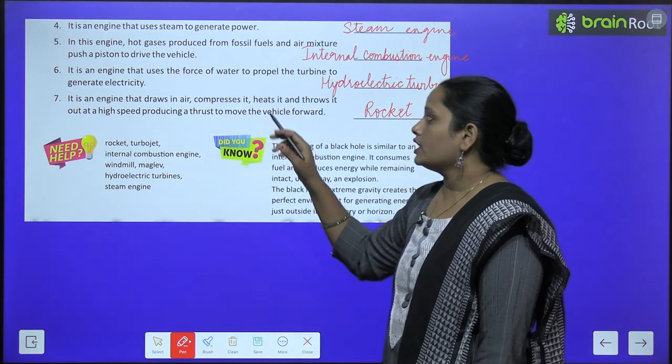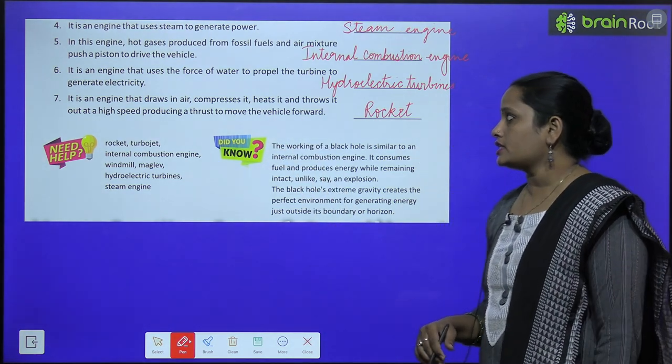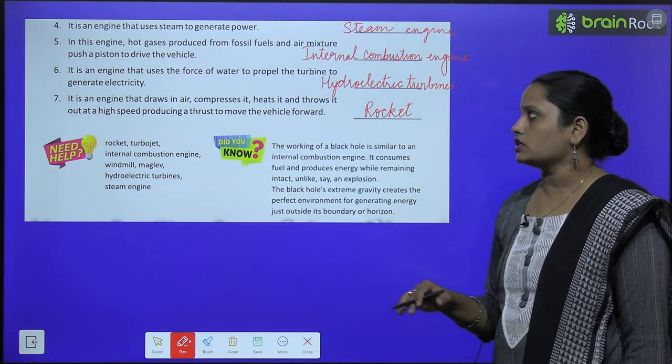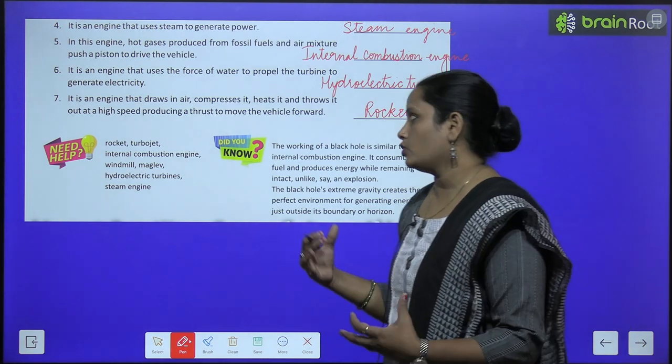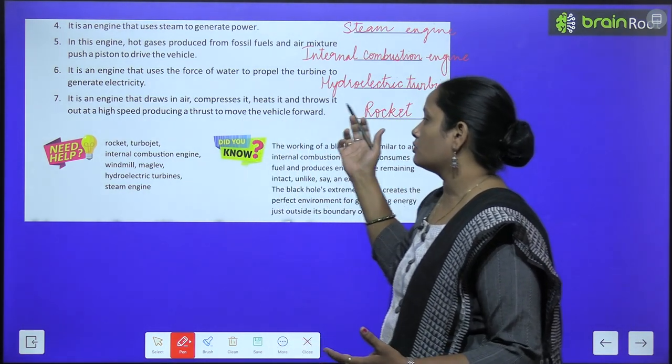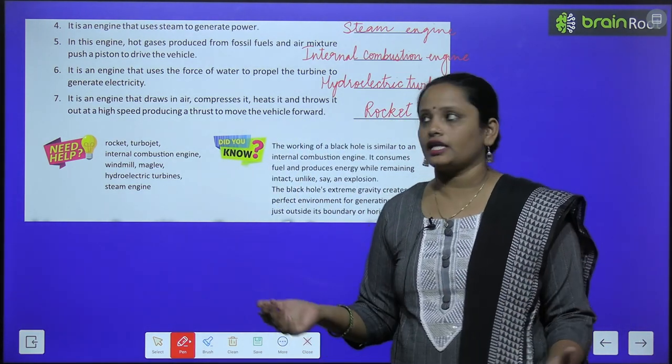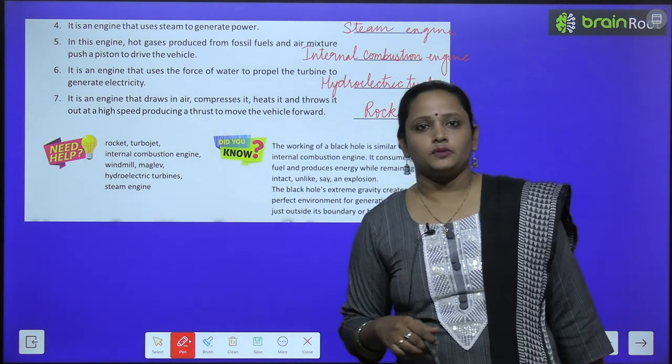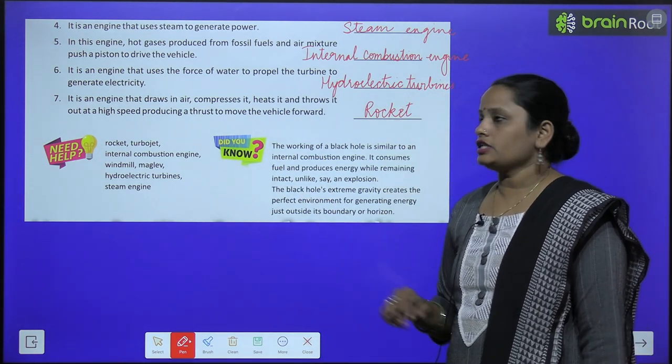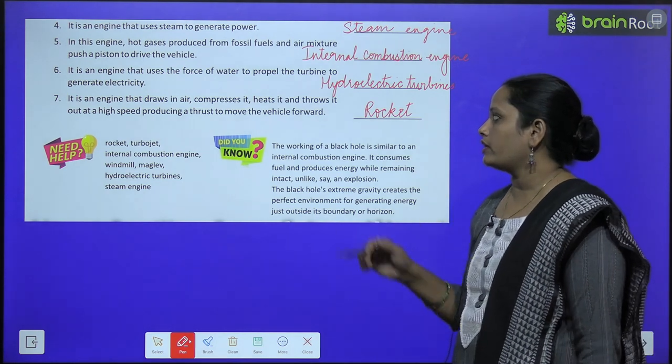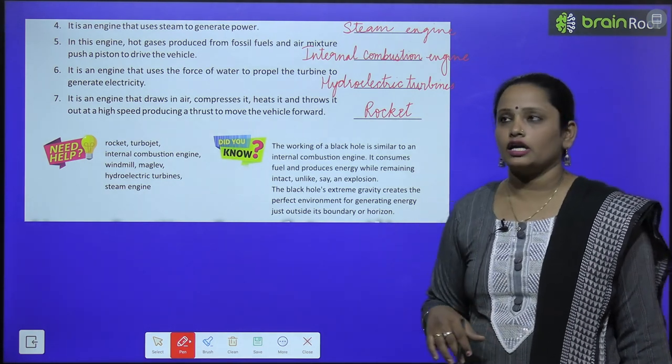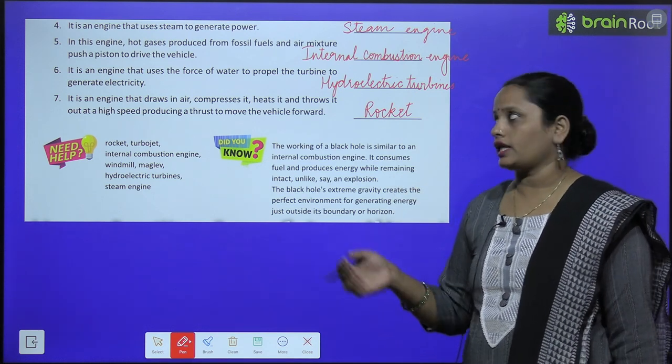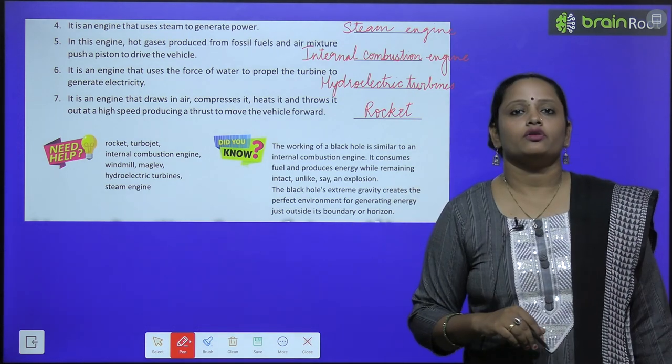Next, it is an engine that draws in air, compresses it, heats it and throws it. Ye ek engine hai kya karta hai air ko leta hai, usse compress karta hai, usse garam karta hai, usse vaapas bahaar nikaal dita hai out at a high speed, ek high speed pe, producing a thrust to move the vehicle forward. Jis se joh vehicle joh hai aagye ki taraf jata hai. And iska naam hai rocket.